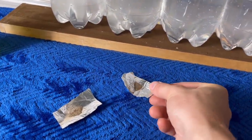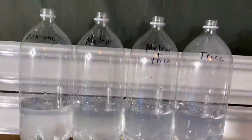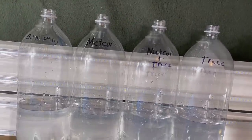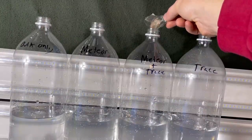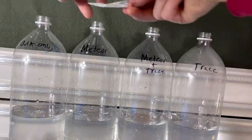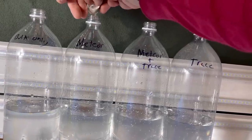Now I'm going to take the meteorite dust which I've weighed out into two equal samples of 65 milligrams each. I'm going to put it into the two center bottles. There we go. One meteorite dust. Two meteorite dust. Perfect.